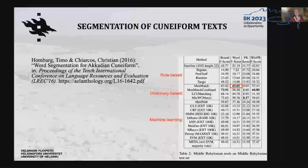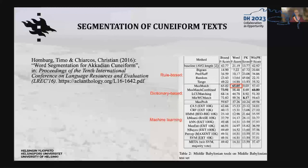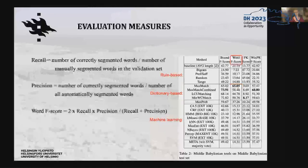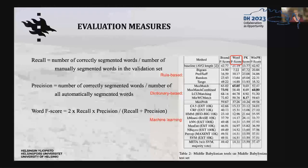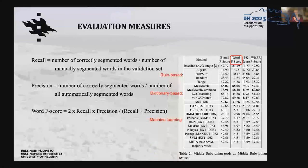As a starting point, we used Homburg and Chiarcos's report on their attempts at segmenting Akkadian cuneiform texts. In their experience, dictionary-based methods worked better than rule-based methods or machine learning algorithms. To measure the correctness of automatic segmentation, we use the word F-score, which is one of the measures also used by Homburg and Chiarcos. The word F-score combines word recall and word precision.